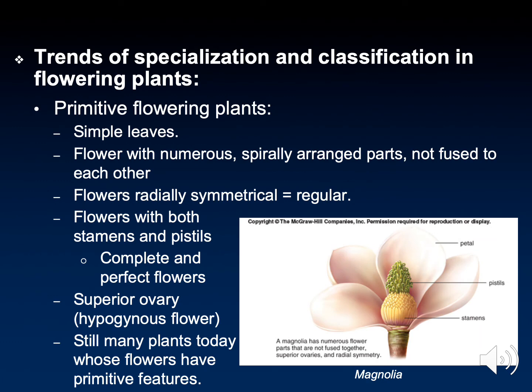Over the course of evolution, flowers evolved to become more and more specialized, their parts also becoming more and more specialized. Primitive flowers, as we learned earlier, lacked petals and sepals. But once they developed petals, often they were arranged in a simple radial fashion. These flowers exhibit radial symmetry — in other words, you could draw a line through the flower in any direction, fold it in half, and see two equal symmetrical sides.